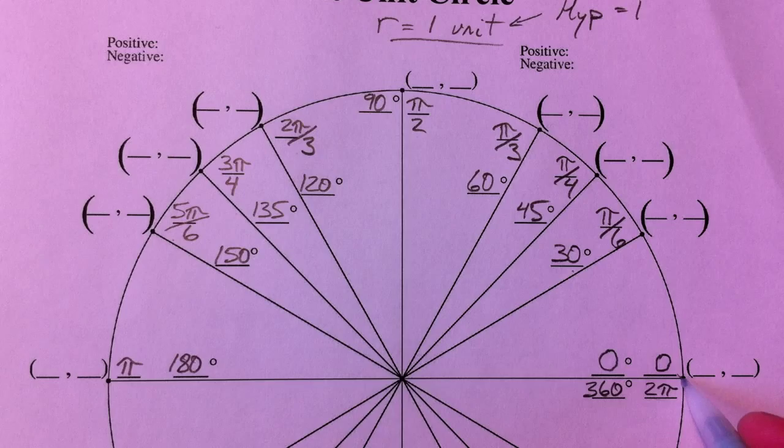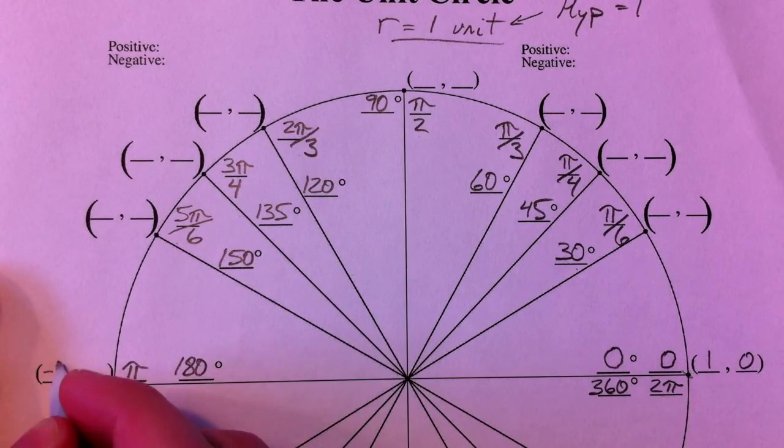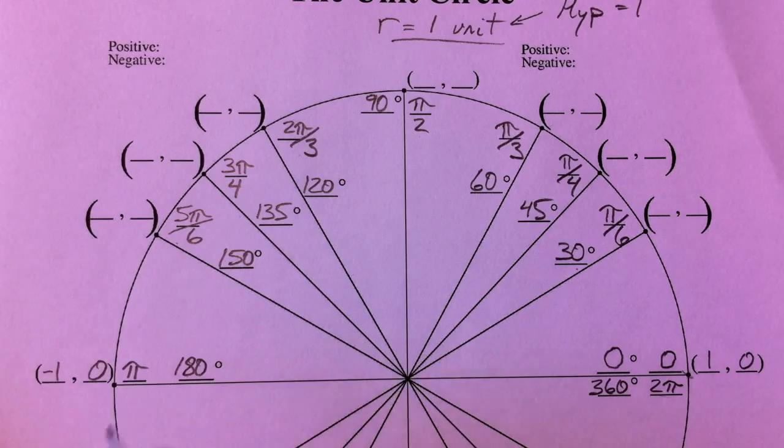Because the radius is 1, we've gone straight to the right, so we've gone 1 to the right, but none up and down. If we go to the other side, we've gone 1 to the left, or negative 1, none up and down.